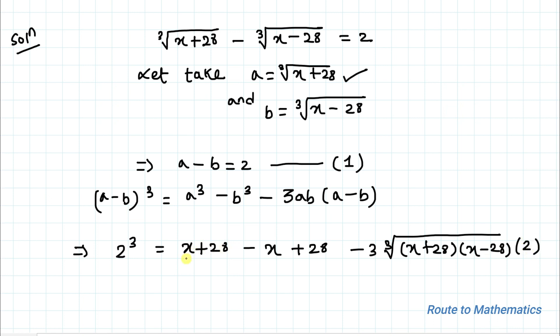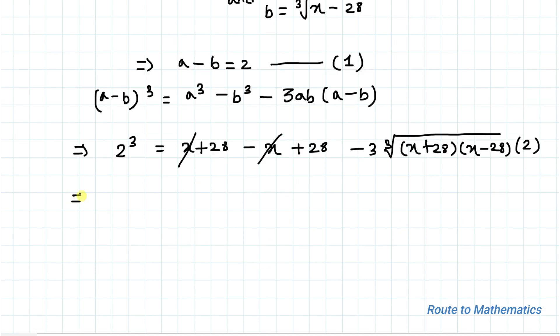So we have negative x. Positive x and negative x get cancelled out. This implies 2 cube is 8 equals 56 minus 6 multiplied with cube root of x square minus 28 square. Here we have applied the algebraic identity of a square minus b square equals a plus b multiplied with a minus b.